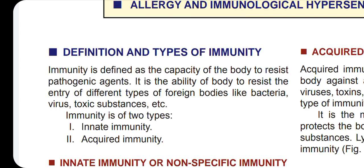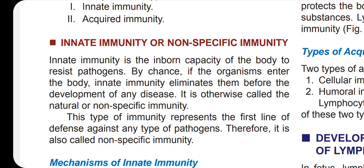In the immune system, there are two types of immunity. The first is innate immunity, or non-specific immunity. Why is it called non-specific immunity? Because it is not specific to any specific pathogen or bacteria. In our body, we develop the innate immunity.